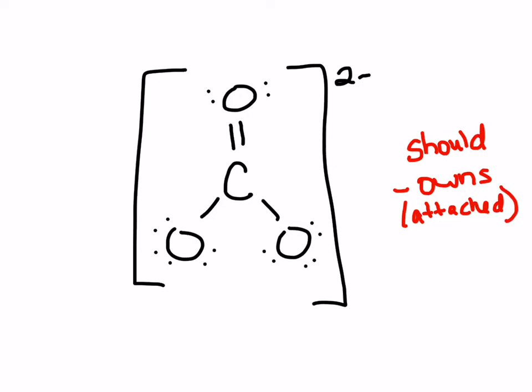Let's look at the carbon in this structure. According to the periodic table, carbon should own four valence electrons. In the structure, the carbon has four bonds. We ordinarily think of bonds as a pair — two shared electrons — but one electron comes from one atom and the other from the other atom. So the carbon in each bond owns one valence electron; the other is coming from the oxygen.